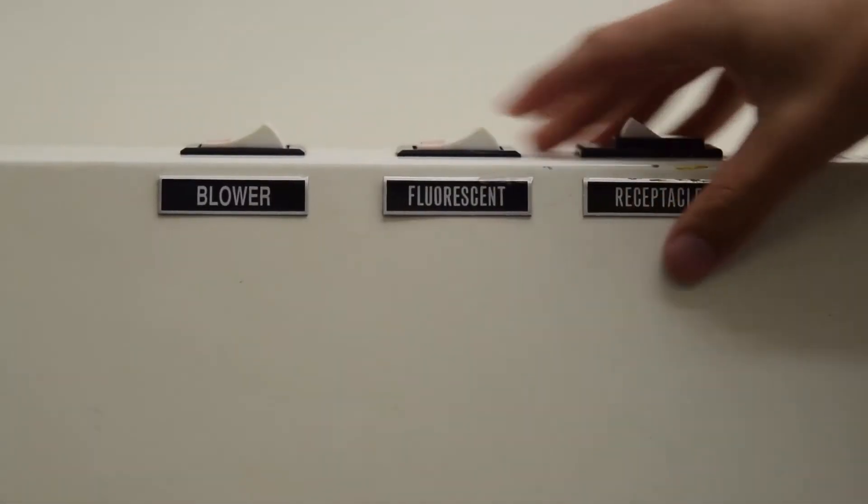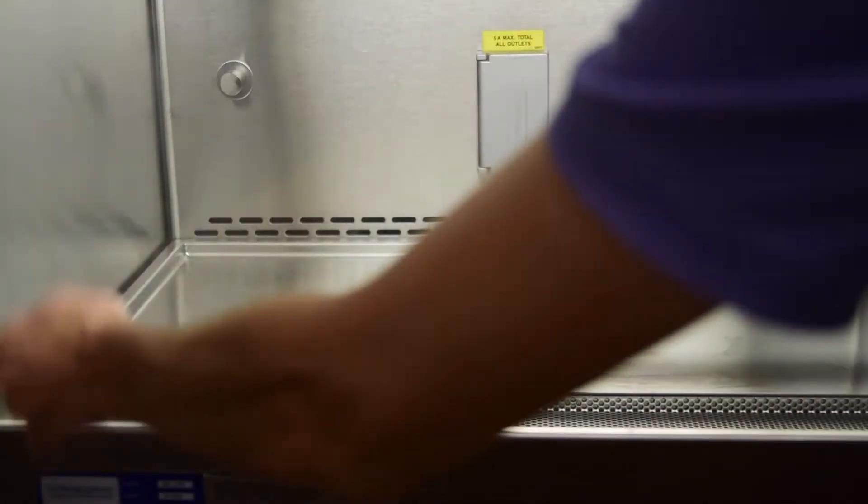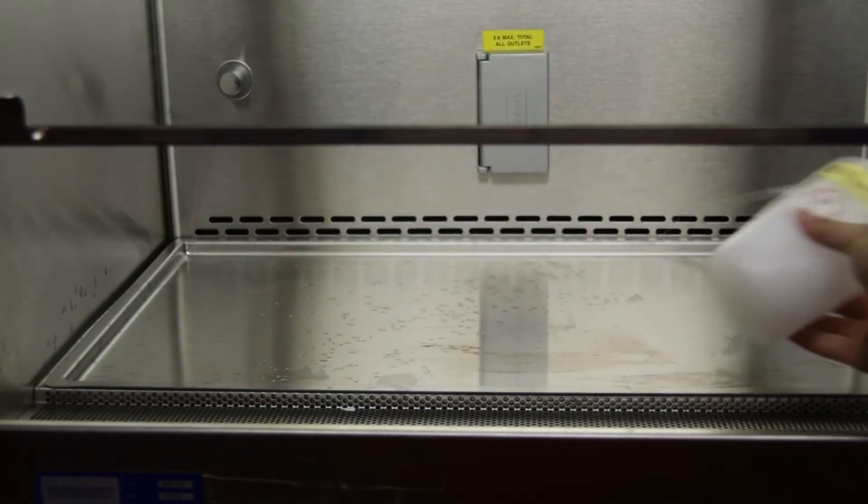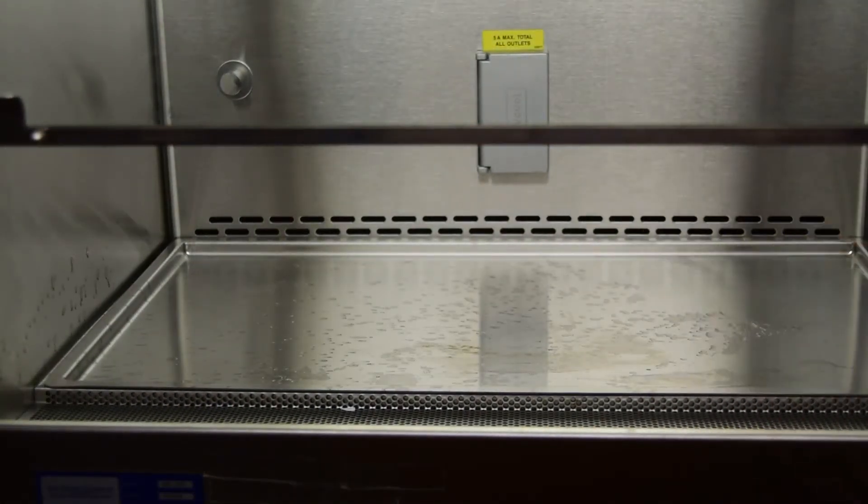Turn on all three switches for the hood in the lab's main space, open the sash to the safety line, and clean the surface with ethanol. This hood can be used for isolating environmental fungi.